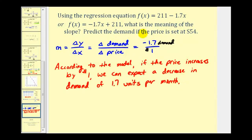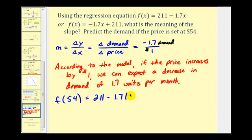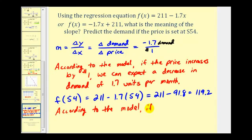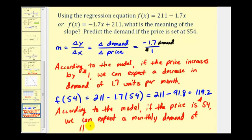Next, we're asked to predict the demand if the price is set at $54. Since x represents the price in dollars, we evaluate the function at x equals 54. F of 54 equals 211 minus 1.7 times 54, which equals 211 minus 91.8, which is 119.2. So according to the model, if the price is $54, we can expect a monthly demand of approximately 119 units.